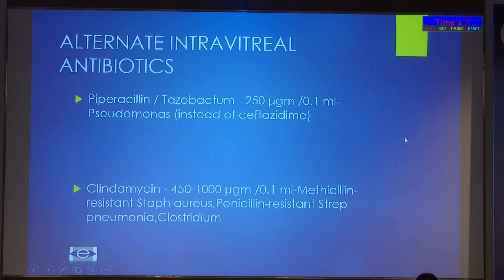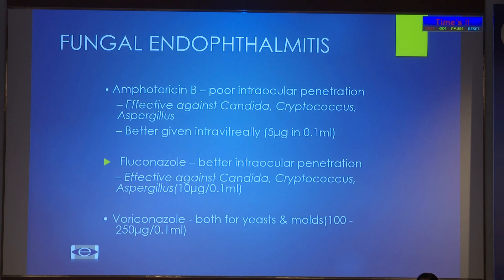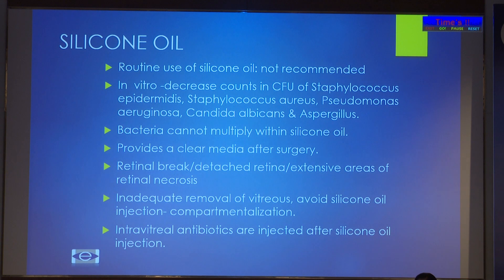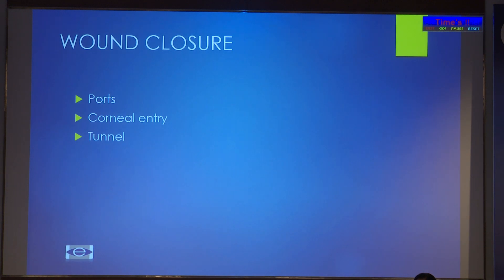As an alternative, especially for Pseudomonas, we can use piperacillin-tazobactam; for MRSA, we can use clindamycin. For fungal endophthalmitis, we have amphotericin, fluconazole, and voriconazole. The role of silicone oil: we don't routinely use it for all patients, but especially in recurrent endophthalmitis with a retinal break or extensive areas of retinal necrosis, silicone oil can be used. If there is incomplete removal of vitreous, avoid silicone oil as it may lead to compartmentalization. Wound closure is very important.